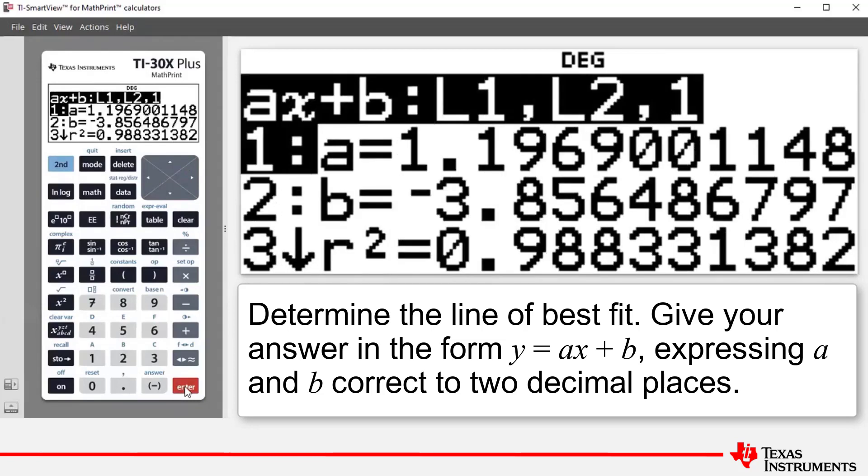And we get our result for our line of best fit. Notice here that A is 1.196, et cetera. And B is negative 3.856, et cetera. So the line of best fit corrected to two decimal places is given by Y equals 1.20X minus 3.86.